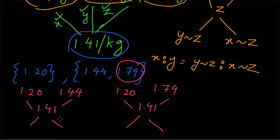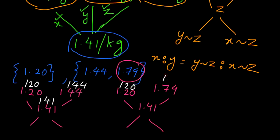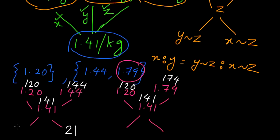Since all numbers have 2 decimal places, we omit the decimal sign and write them as 3-digit numbers. The difference between 120 and 141 is 21. The difference between 141 and 144 is 3. Similarly, the difference between 120 and 141 is 21, and the difference between 141 and 174 is 33. You should not simplify these values — that is a very important point. Your answer will go wrong if you do.